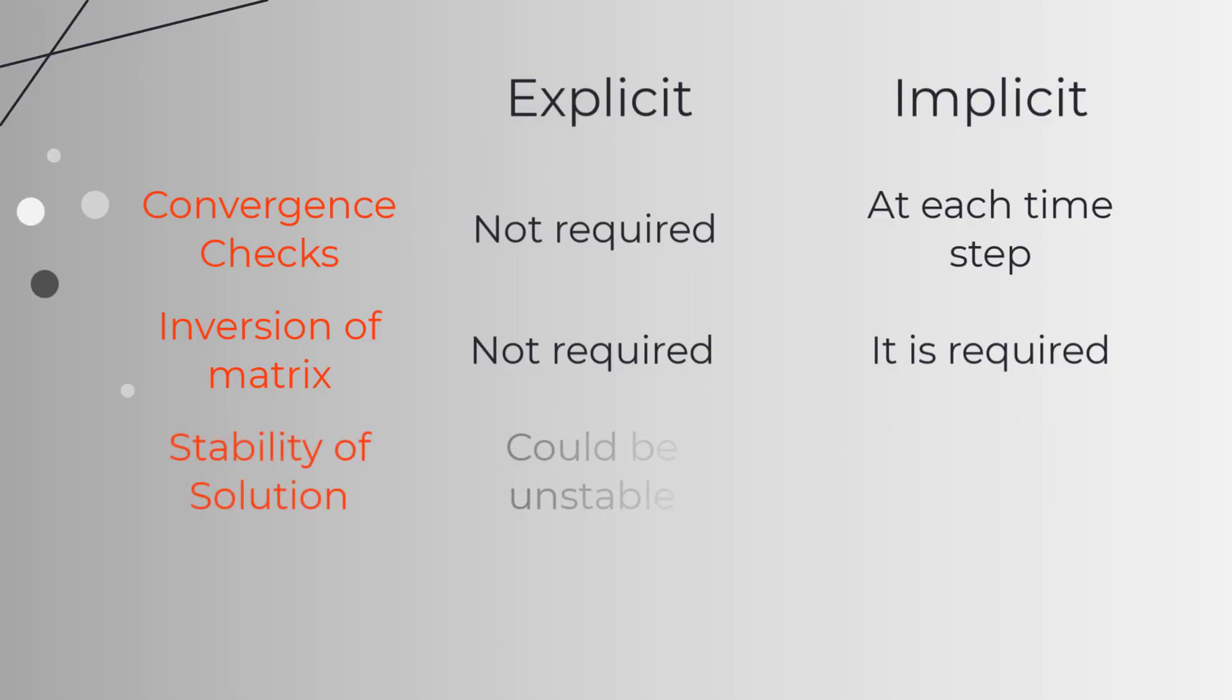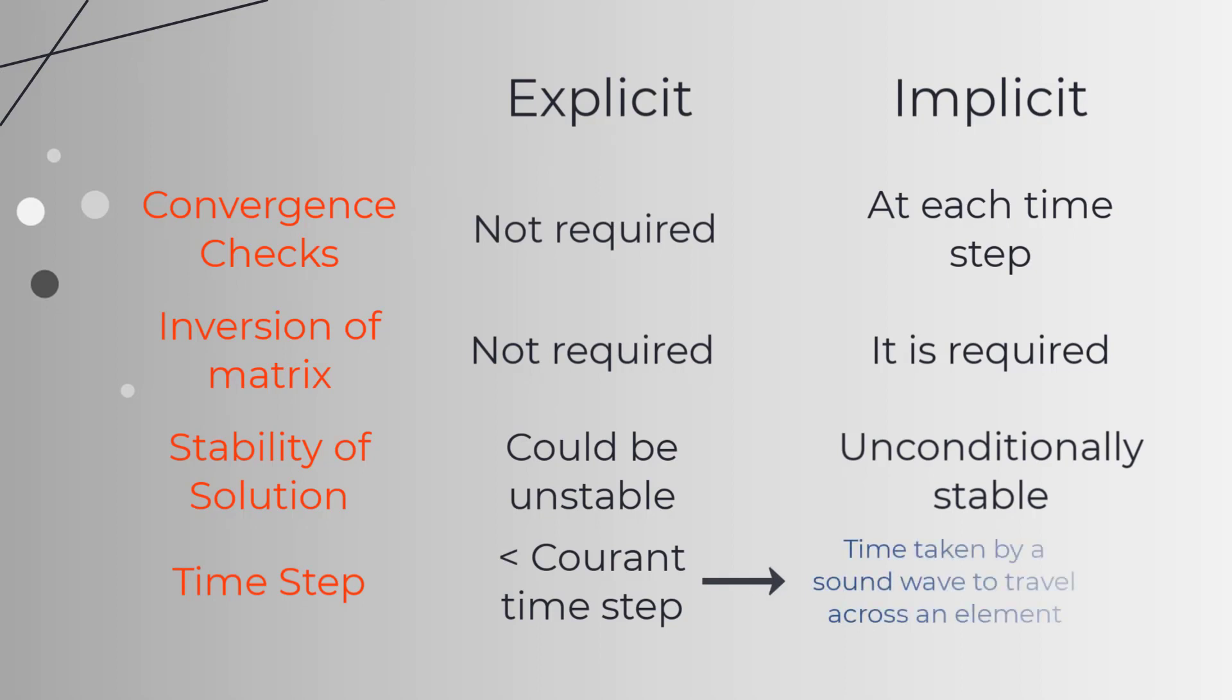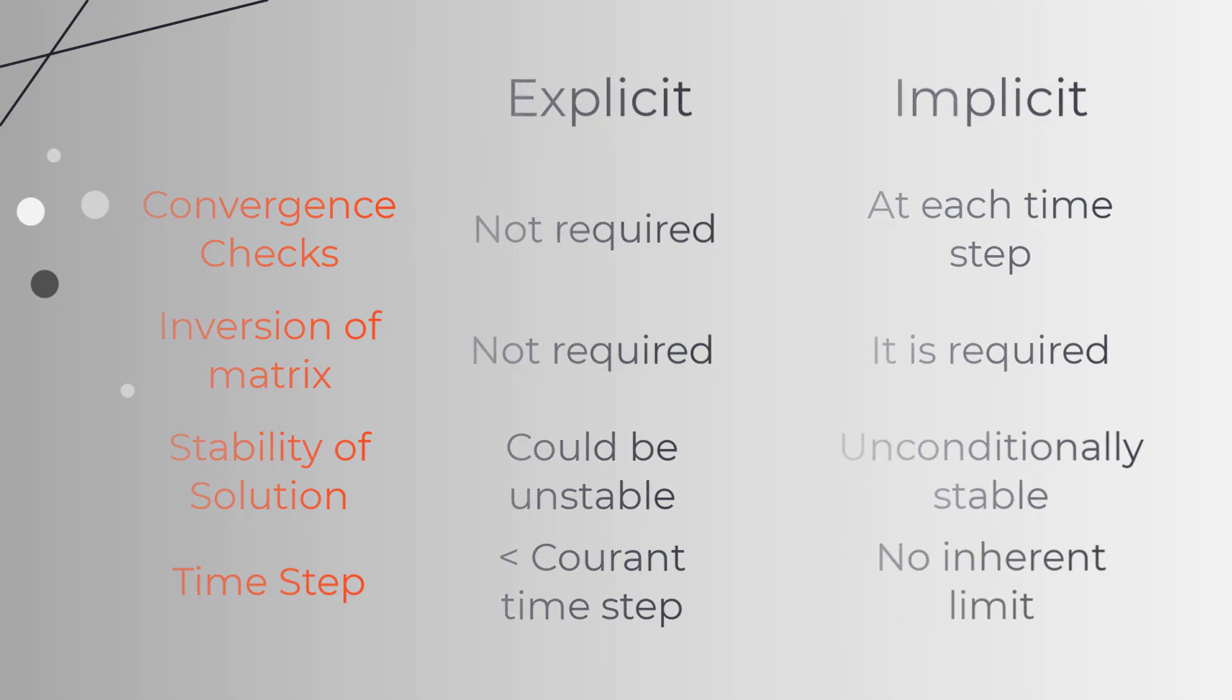In the explicit method, the solution could be unstable and it needs a condition for stability of the solution. However, the implicit method is unconditionally stable for certain integration parameters. In the explicit method, the time step size is less than the critical time step. That is the time it takes a sound wave to travel across an element. And the implicit method has no inherent limit on size of the time step.